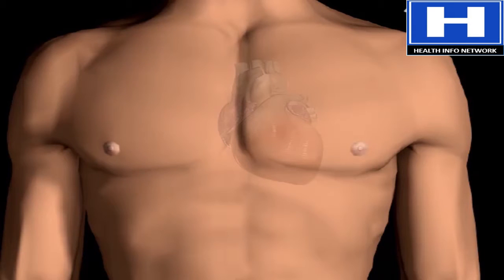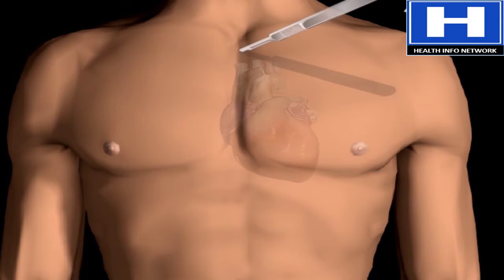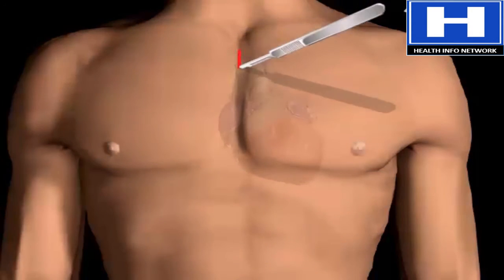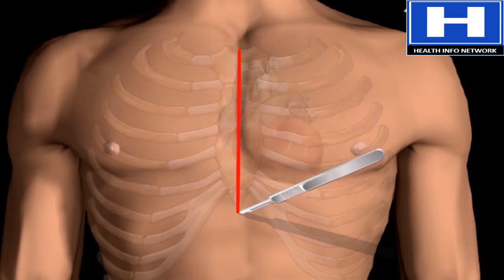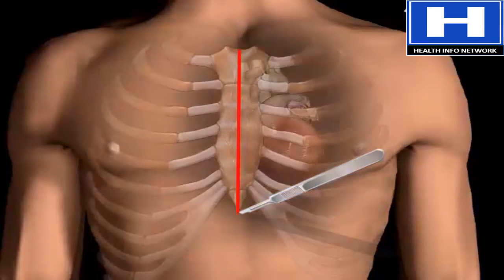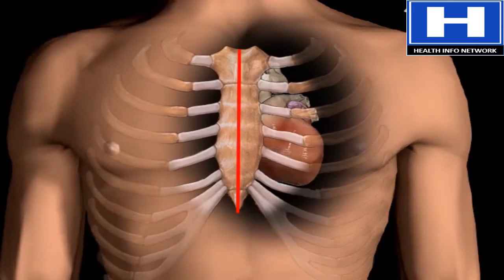Heart bypass surgery creates a new route called a bypass for blood and oxygen to reach the heart. Heart bypass surgery begins with an incision in the chest, and the breastbone is cut, exposing the heart.